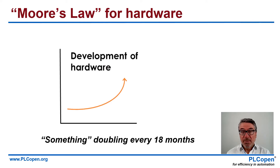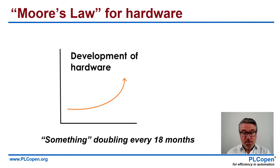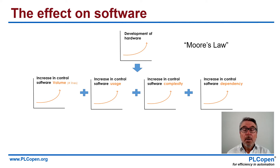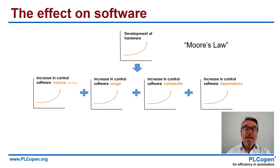Let's first look at the hardware that software runs on. We know Moore's Law — something doubles every 18 months. It used to be the number of transistors on a chip, but nowadays it can also be the storage on your hard drive or the speed over your network. This had an effect on software. We could run more code, lines of code, so the volume increased, the usage increased. You saw software and chips popping up everywhere — increasing in usage, in complexity, and our dependency on it.